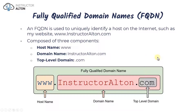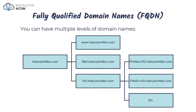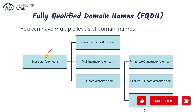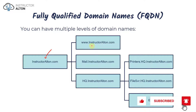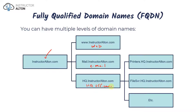When you register a domain name like instructoralton.com, you can create multiple different subdomains associated with it. Looking at this simple hierarchy diagram, on the left we have the top level — instructoralton.com — and from it I created www.instructoralton.com, mail.instructoralton.com, and hq.instructoralton.com. The www subdomain is associated with our web server, and mail is associated with our email server.